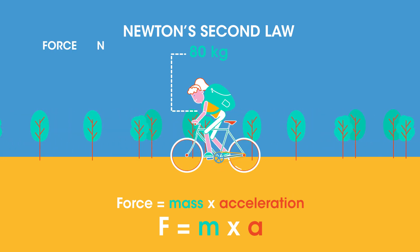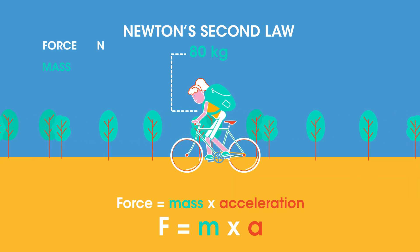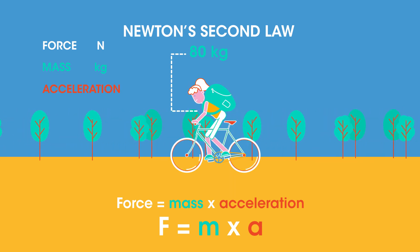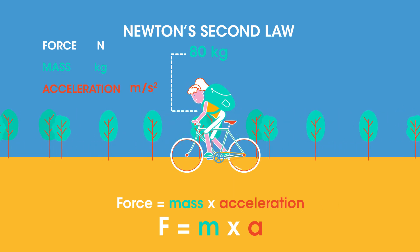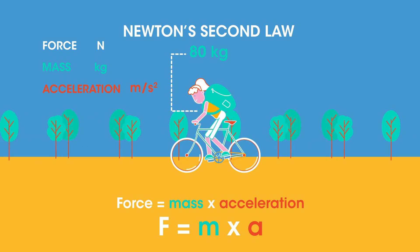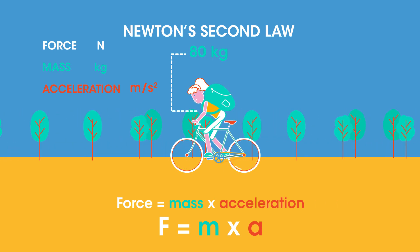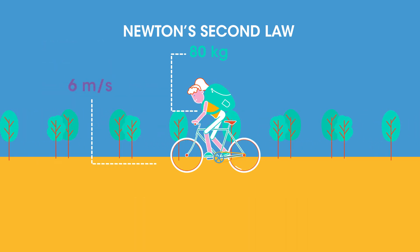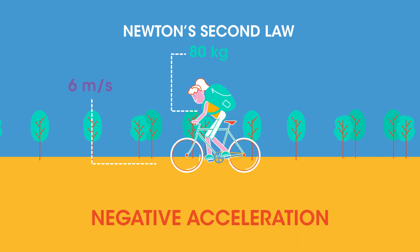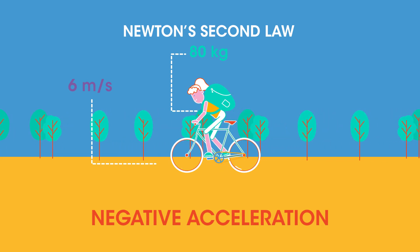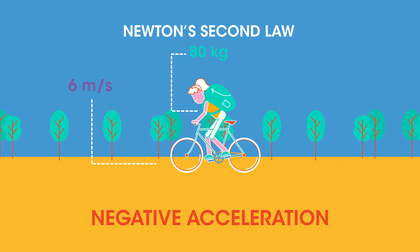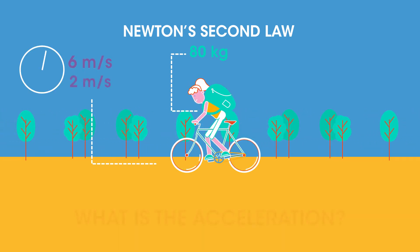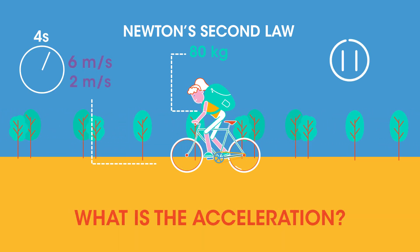When force is measured in Newtons, mass is measured in kilograms, and acceleration is measured in meters per second per second. Remember that slowing down is also a change in velocity, but this time the acceleration will be negative. Suppose she applies the brakes — her speed changes from 6 meters per second to 2 meters per second in 4 seconds.